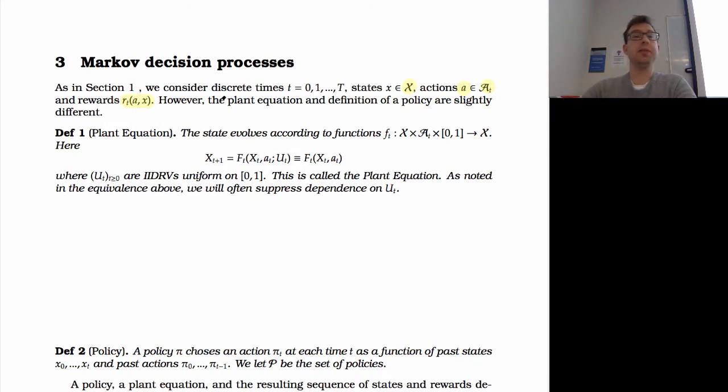However, before, the evolution of this process X was deterministic. Given the state and the action that you chose, the place that you ended up next was for certain. Now, the plant equation is slightly different. In fact, it's going to evolve in a random way. So specifically, states are going to evolve according to functions - oh, and typo, I told you there'd be typos, that should be capital F - F of T of X of A, and then some uniform 0, 1 random variable is going to determine the next state X.